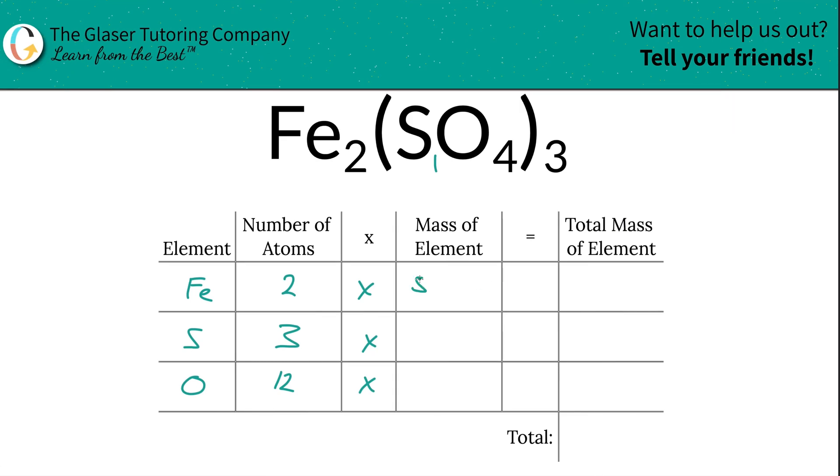So for iron here we have 55.85, the sulfur mass is about 32.07, and then oxygen is going to be 16.